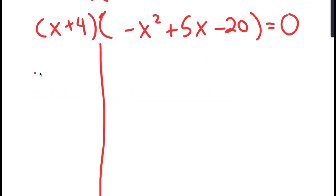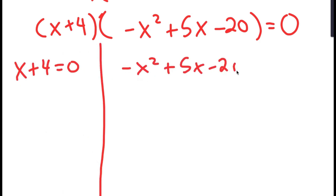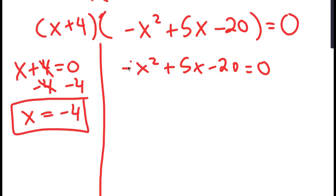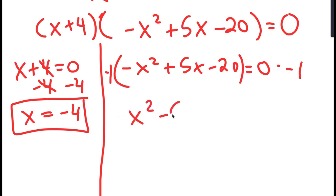So I get two equations from this: x plus 4 equals 0, and negative x squared plus 5x minus 20 equals 0. For x plus 4 equals 0, we subtract 4 from both sides and get x equals negative 4. For negative x squared plus 5x minus 20 equals 0, I multiply both sides by negative 1 to get x squared minus 5x plus 20 equals 0.